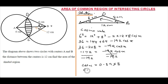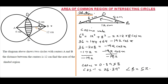Taking cos inverse gives us the angle x = 26.39 degrees. To get the full angle at B, I simply double this value, so the angle at B becomes 52.78 degrees. I'll note it down — 52.78 — since we'll use it at some point.